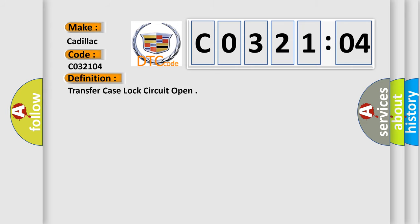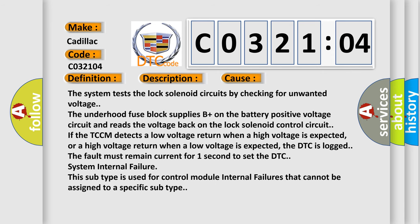The basic definition is Transfer Case Lock Circuit Open. And now this is a short description of this DTC code: Ignition on system voltage 10.5218. This diagnostic error occurs most often in these cases.